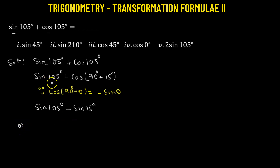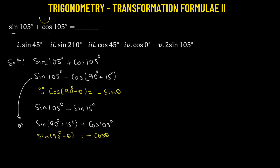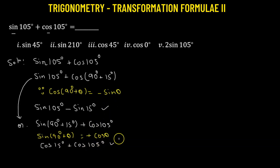The other way is we can convert the sine function to the cosine function. We will use the fact that sine of 90 degrees plus 15 degrees plus cosine of 105 degrees. Using the identity sine(90° + θ) = cosine θ, sine(90° + 15°) becomes cosine 15 degrees. So we have cosine 15 degrees plus cosine 105 degrees. We can either go with this approach or the previous one — both of them are going to give us the correct answer.